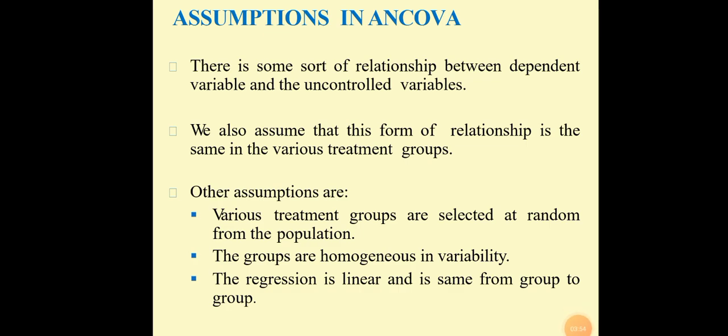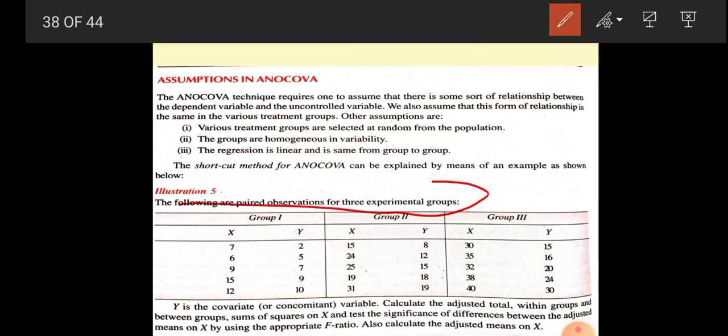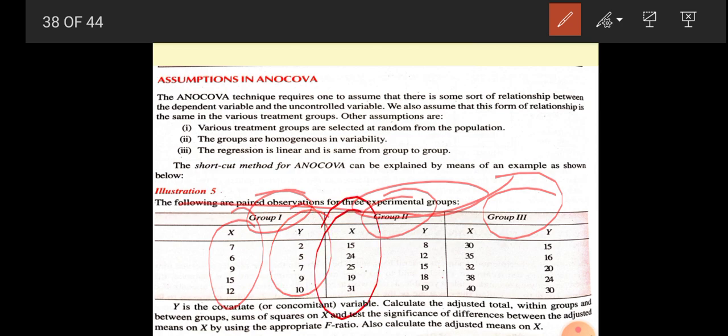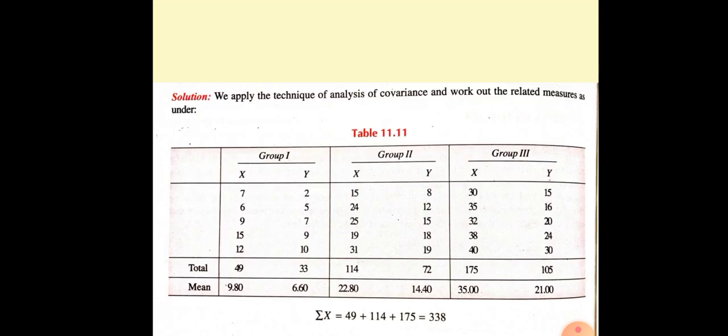As we have already discussed about the assumptions, now we will go to the example. In this example, the following are paired observations of three experimental groups: group 1, group 2, and group 3. There are paired observations XY for each group. Y is a covariate or concomitant variable. Calculate the adjusted total within group and between group sums of square X and test the significance of difference between the adjusted mean and F ratios. So there are three experimental groups with paired observations.